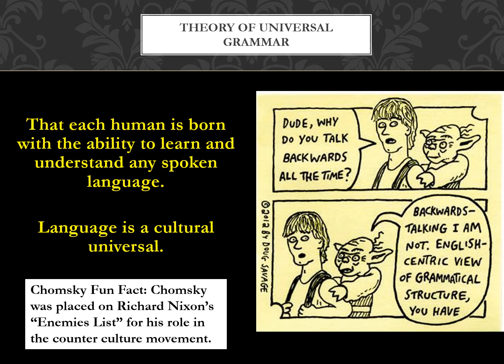Children are able to pick up languages much more easily than adults because we are born with that ability, which is hyperactivated through early childhood to acquire language skills quickly. As part of the theory of universal grammar, Chomsky says all human grammar is recursive — you can continually add on, such as 'Billy threw the ball, and Judy caught the ball, and Judy ran to the forest.' This is a universal in all human languages. As a fun fact, Chomsky was placed on Richard Nixon's enemies list for his role in the counterculture movement in the 1960s.